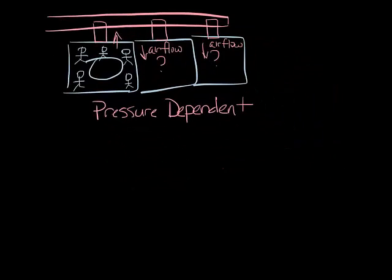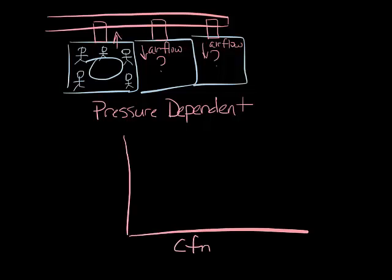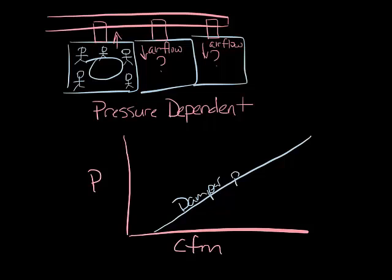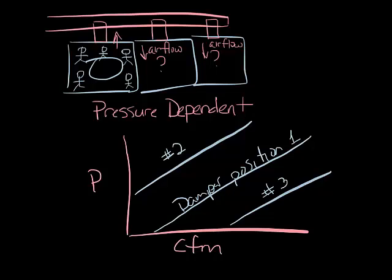If we graph airflow versus pressure in a pressure dependent system, it'll look something like this, where for any specific damper position, as the pressure increases, so does the airflow. So if the damper is in a starting position — position one — the airflow will go up and down if the pressure changes. If you need to change the damper position to let in more air, it'll still float up and down based on pressure changes in the system.